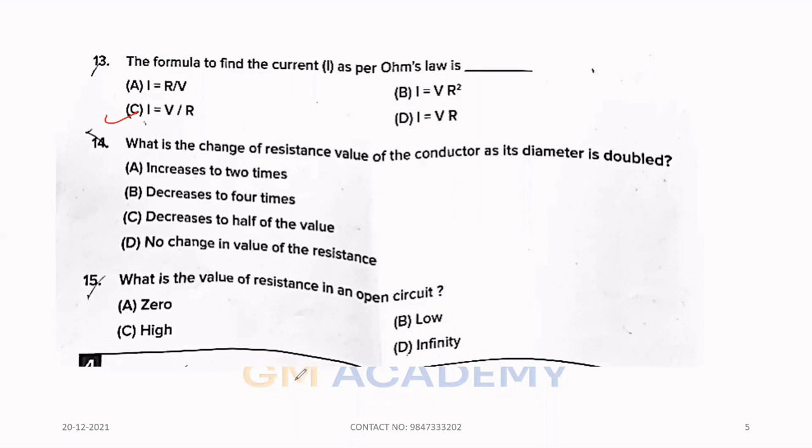Fourteenth question, what is the change of resistance value of the conductor as its diameter is doubled? Option B, decreases to 4 times. Fifteenth question, what is the value of resistance in an open circuit? Option D, infinity.